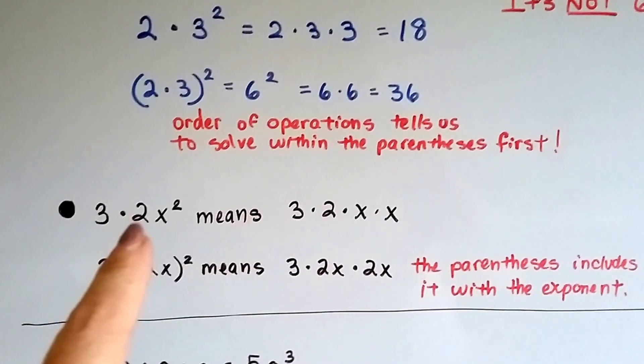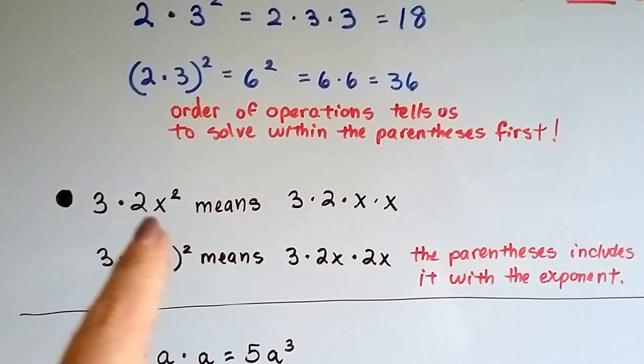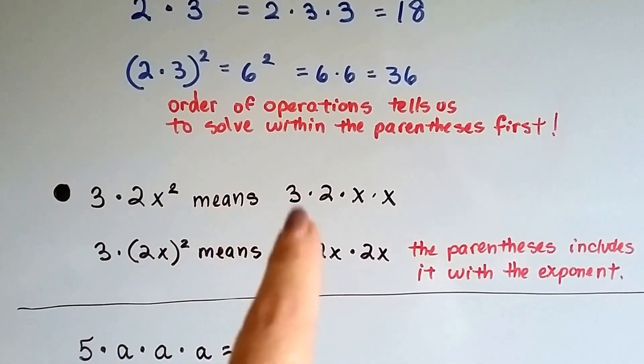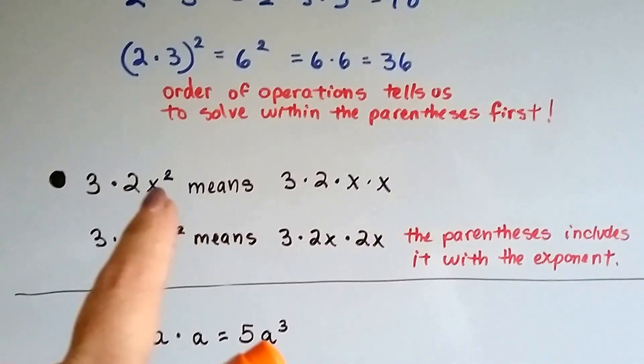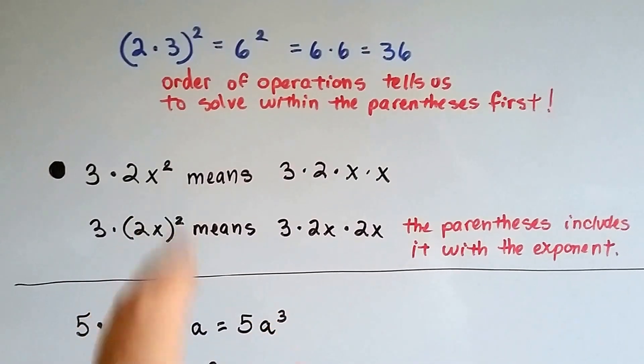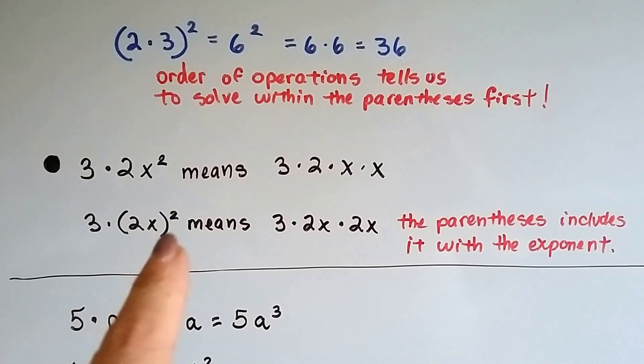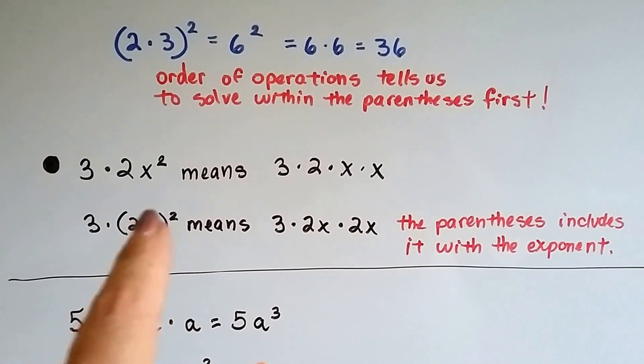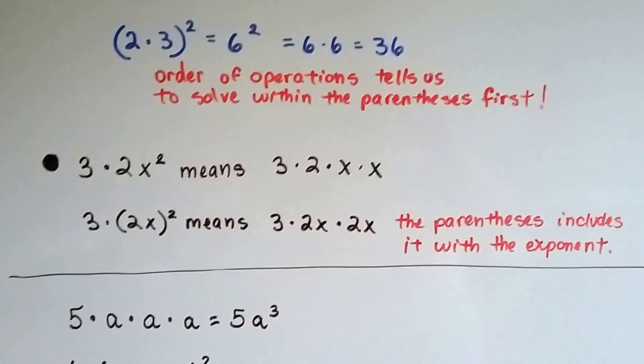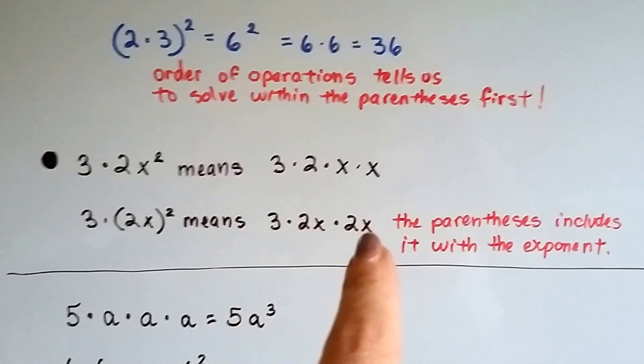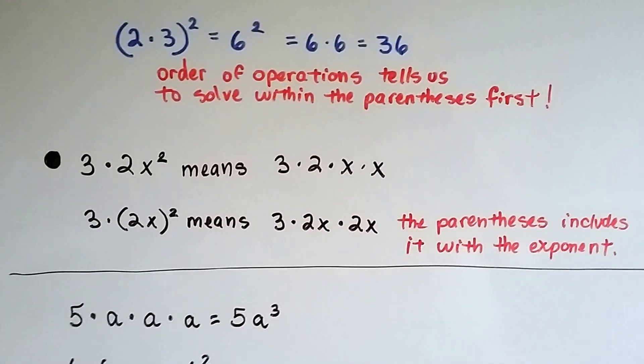If we have 3 times 2x squared, or 2x to the second power, it means 3 times 2 times x times x. Only the x is to the second power. See that? If we have 3 times 2x squared, that means the 2x are included with the exponent. So it means 3 times 2x times 2x. See how the parentheses includes it with the exponent?